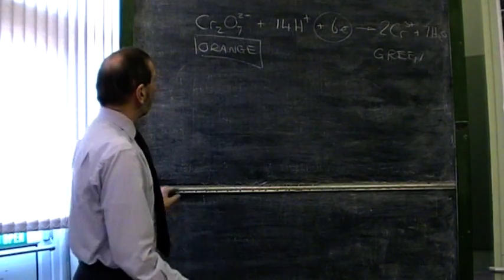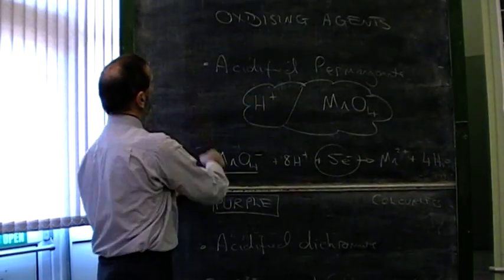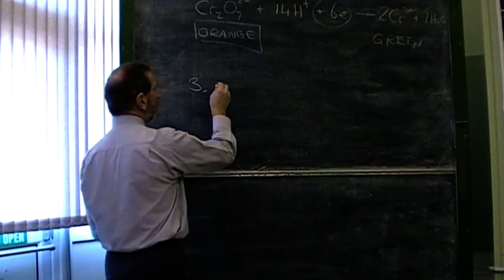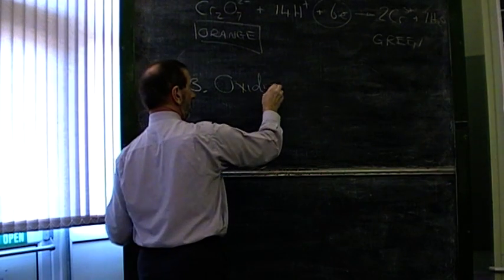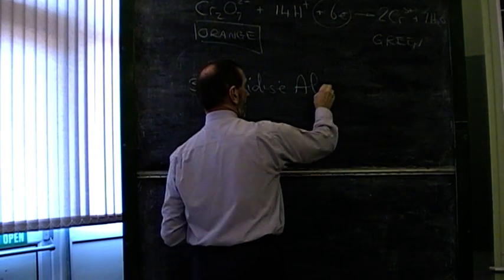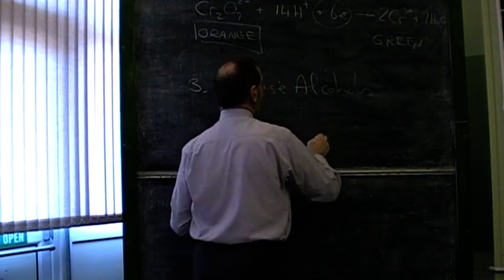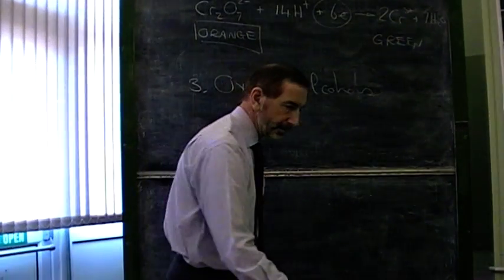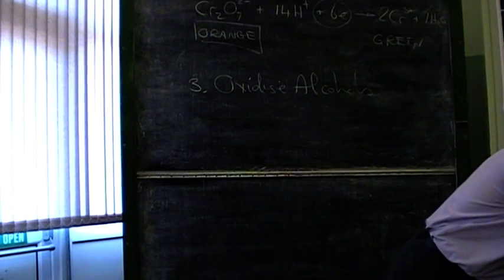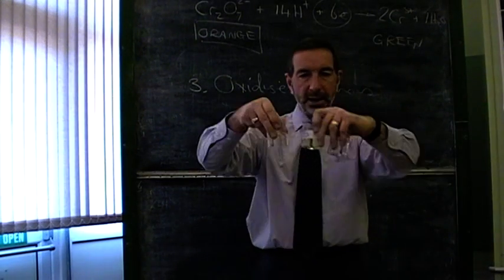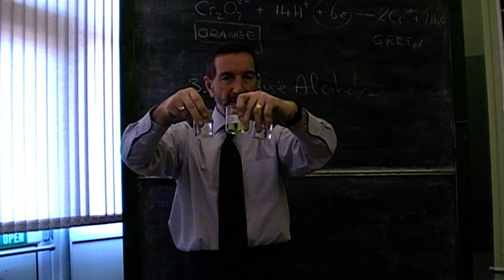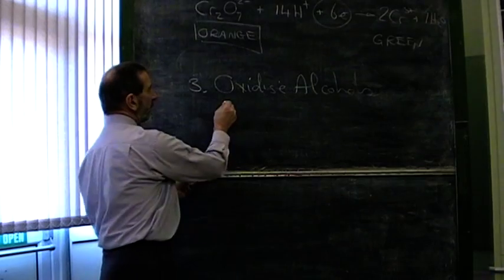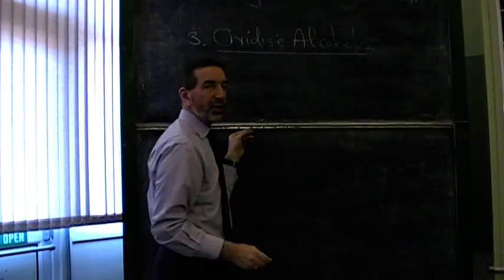Let's bring these oxidising agents into contact with some alcohols. Now, I have alcohols in these beakers. But we have three different alcohols. How is that possible? Because when it comes to alcohols, they fall into three types.